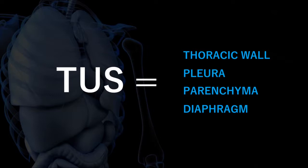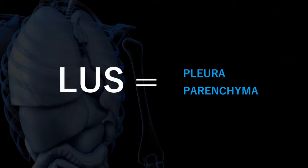The use of ultrasound to examine the thoracic wall is relatively straightforward, but for the diaphragm there isn't any specific training program at the moment that allows you to bring diaphragmatic ultrasound into your scope of practice. It's something I have written for one of the ultrasound training programs in the UK, but that is still under development. So the difference between thoracic ultrasound and lung ultrasound, in my opinion, is that lung ultrasound just includes investigation of the pleura and the lung tissue itself.